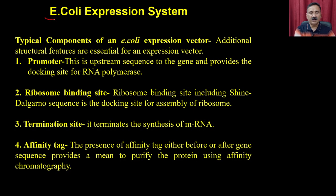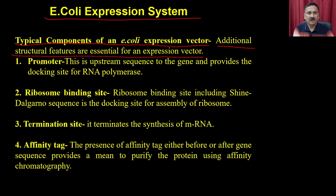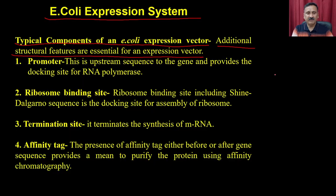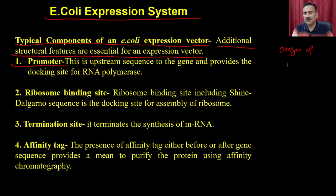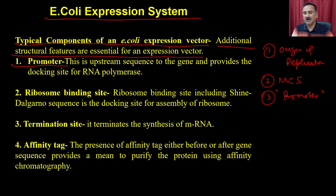In the E. coli expression system, additional structural features are essential for an expression vector. For a cloning vector you require the origin of replication, a multiple cloning site. But for an expression vector, you additionally require a promoter, which is going to decide the protein production.